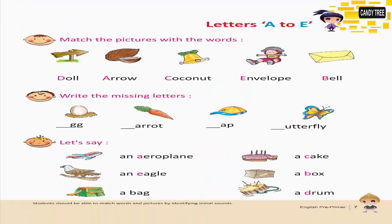Letters A to E. Match the pictures with the words. Write the missing letters. Let's say: An aeroplane, An eagle, A bag, A cake, A box, A drum.